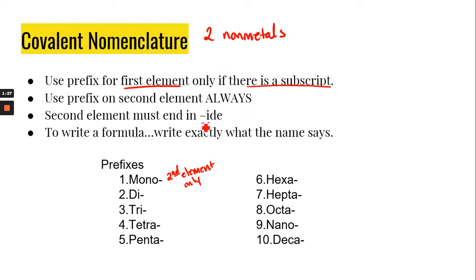The second element still has to end in -ide just like it did for ionic. To write a formula you have to just write down exactly what it says. You don't cross charges because we are dealing with non-metals.